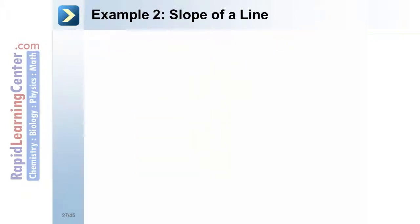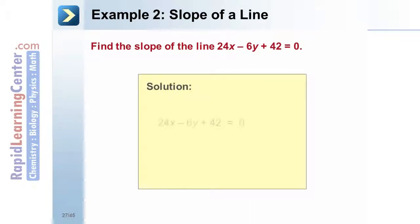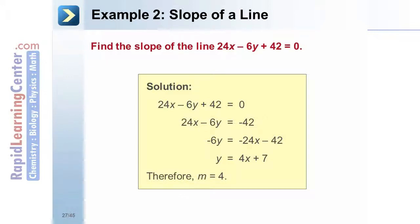Example 2 — slope of a line: find the slope of the line 24x minus 6y plus 42 equals 0. Solution: convert to slope-intercept form by isolating y. Subtract 42 from both sides to get 24x minus 6y equals 42. Subtract 24x from both sides to get negative 6y equals negative 24x minus 42. Divide both sides by negative 6 to get y equals 4x plus 7. The slope of the line is 4.